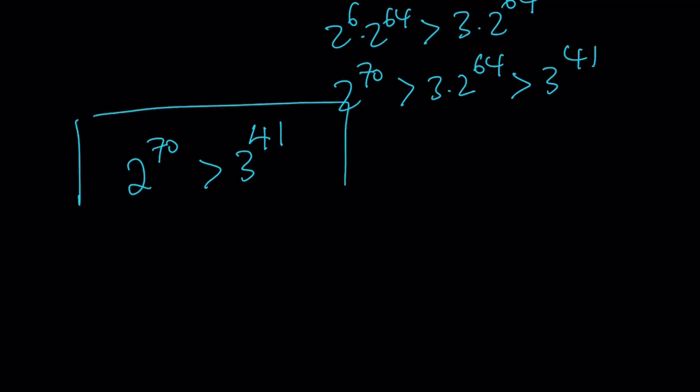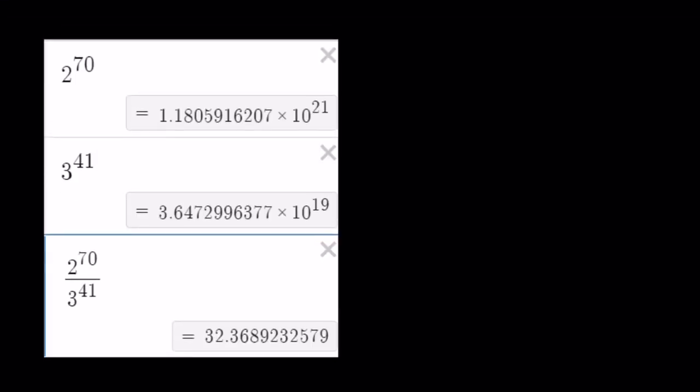The larger number in this case is obviously going to be 2 to the power 70. Now I'm going to show you the numerical values so we can look at a comparison that way too. We found out that 2 to the power 70 is greater than 3 to the power 41, and that's true — numerically verified. I also looked at their ratio, because that gives us a better idea of how many times bigger the bigger number is, and in this case it's about 32 times.